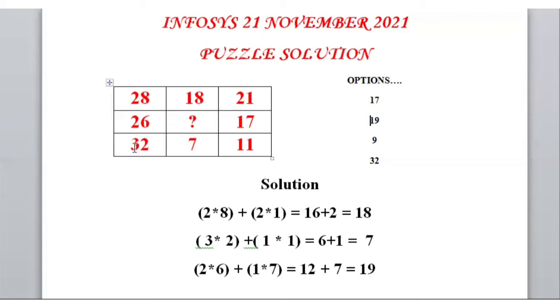If we apply this trick to the last row, 32 means 3 multiply by 2 equals 6, and plus 1 multiply by 1 equals 1, which means 6 plus 1 equals 7. Yes, our solution is 100% correct. So let's apply this trick on the second row.